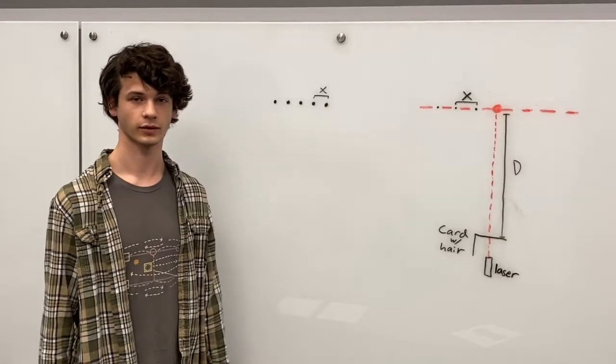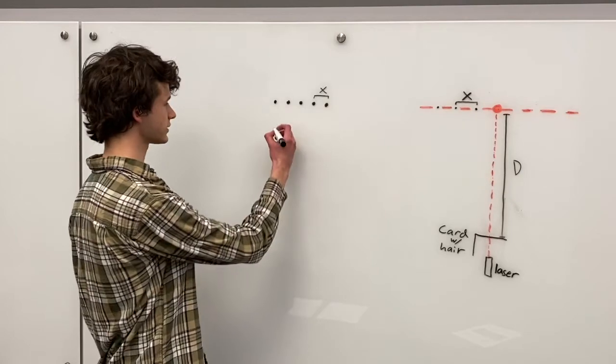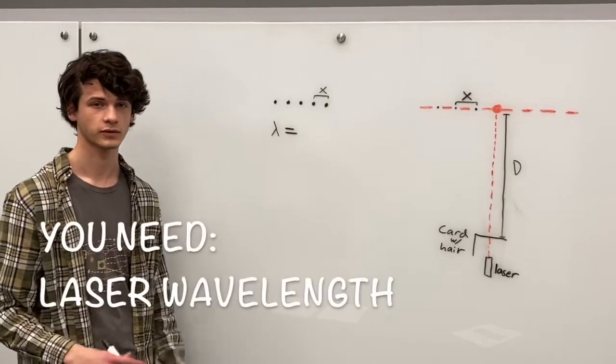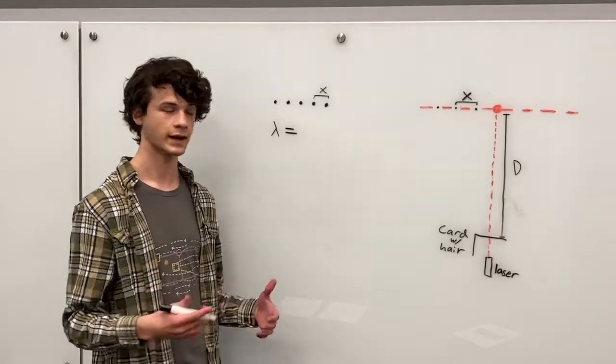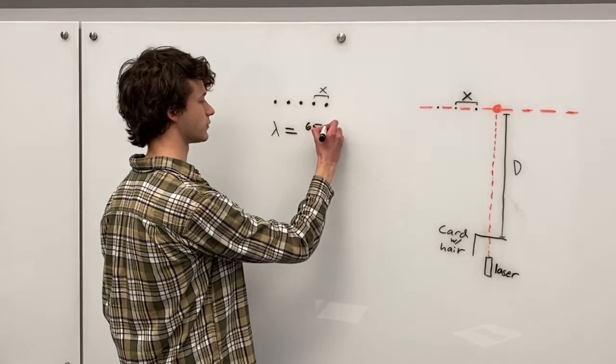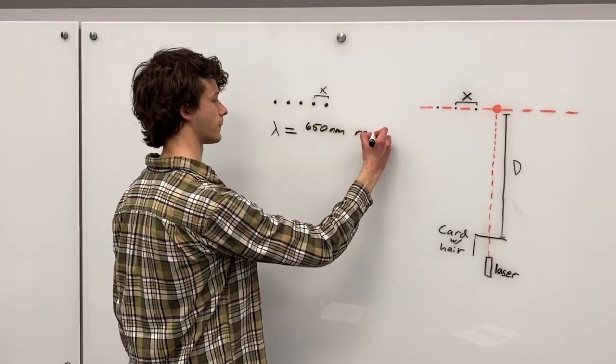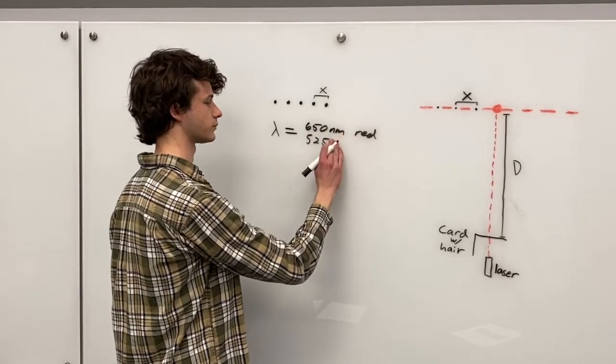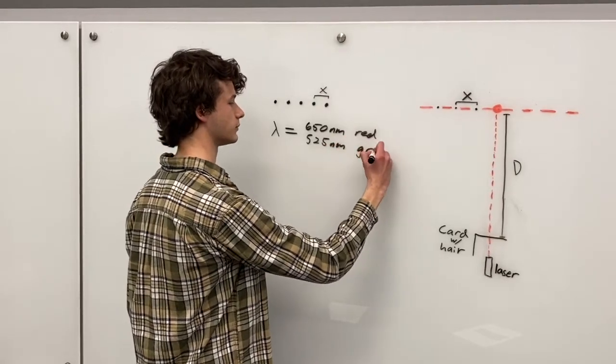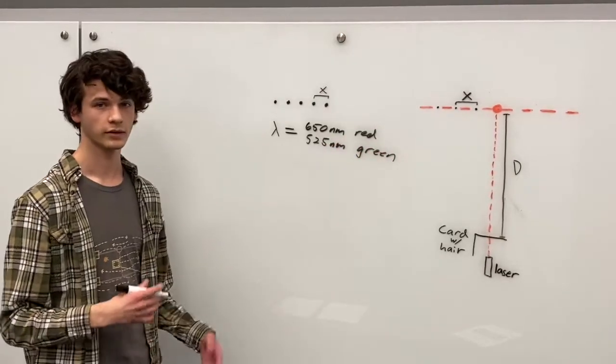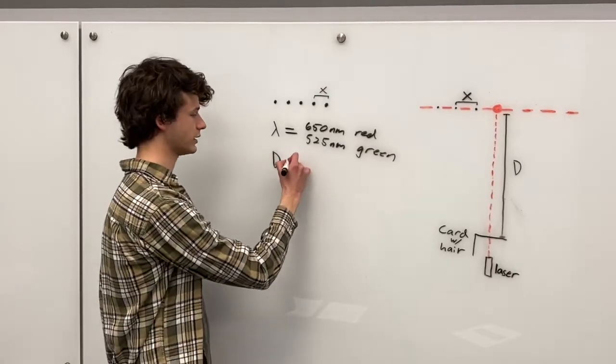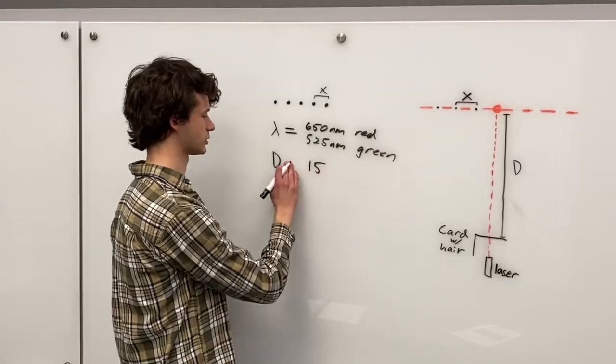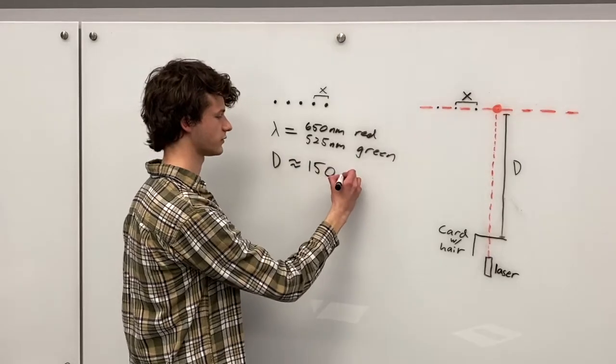To find the diameter of your hair we need to measure three things. First, lambda is the wavelength of your laser light and so this should be listed on your laser. If it's not you can use 650 nanometers for red or 525 nanometers for green. The next thing that we need is capital D and this is the distance between your screen and the card. I'm just going to say that this should be about 150 centimeters.